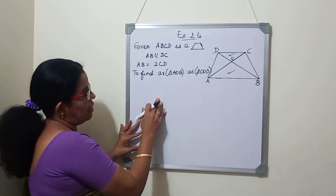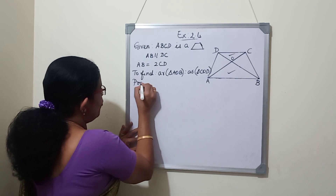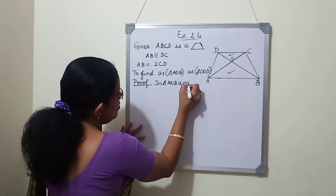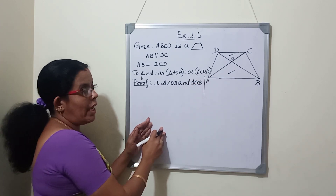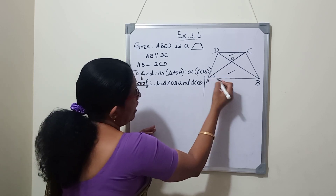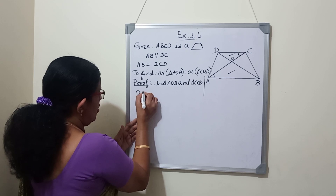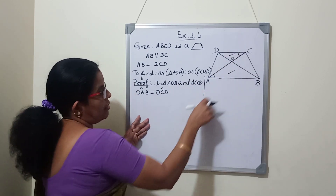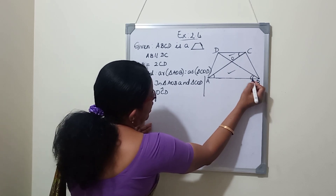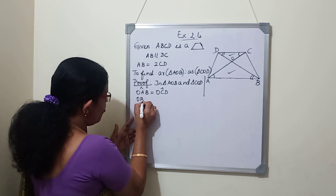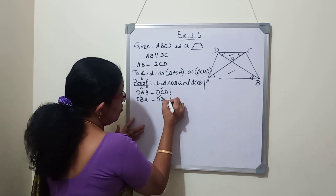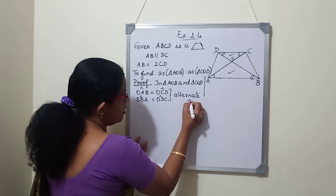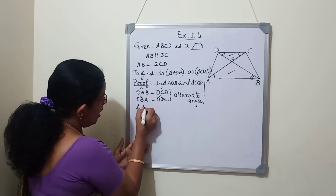Since the triangles AOB and COD are not given as similar, we first need to prove similarity. In triangles AOB and COD: angle OAB equals angle OCD - reason: alternate angles, since AB and CD are two parallel lines and AC is the transversal. Similarly, angle OBA equals angle ODC - also alternate angles. Therefore these two triangles are similar by AA criteria.